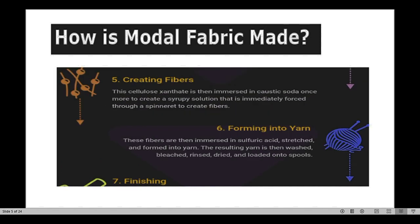The fifth step is creating the fiber. The cellulose xanthate is then immersed in caustic soda once more to create a syrup solution that is immediately forced through a spinneret to create the fiber. In this step, it is converted into fiber form.